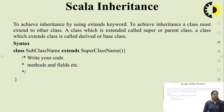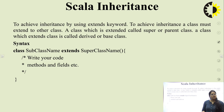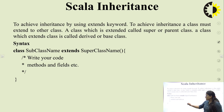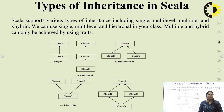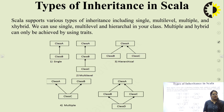Now, Scala inheritance. To achieve inheritance, we use the 'extends' keyword. A class which is extended is called the super or parent class. A class which extends another class is called the derived or child class. The syntax is: class SubclassName extends SuperclassName. Scala supports various types of inheritance: single, multiple, multilevel, and hybrid. Multiple and hybrid inheritance can only be achieved using traits.